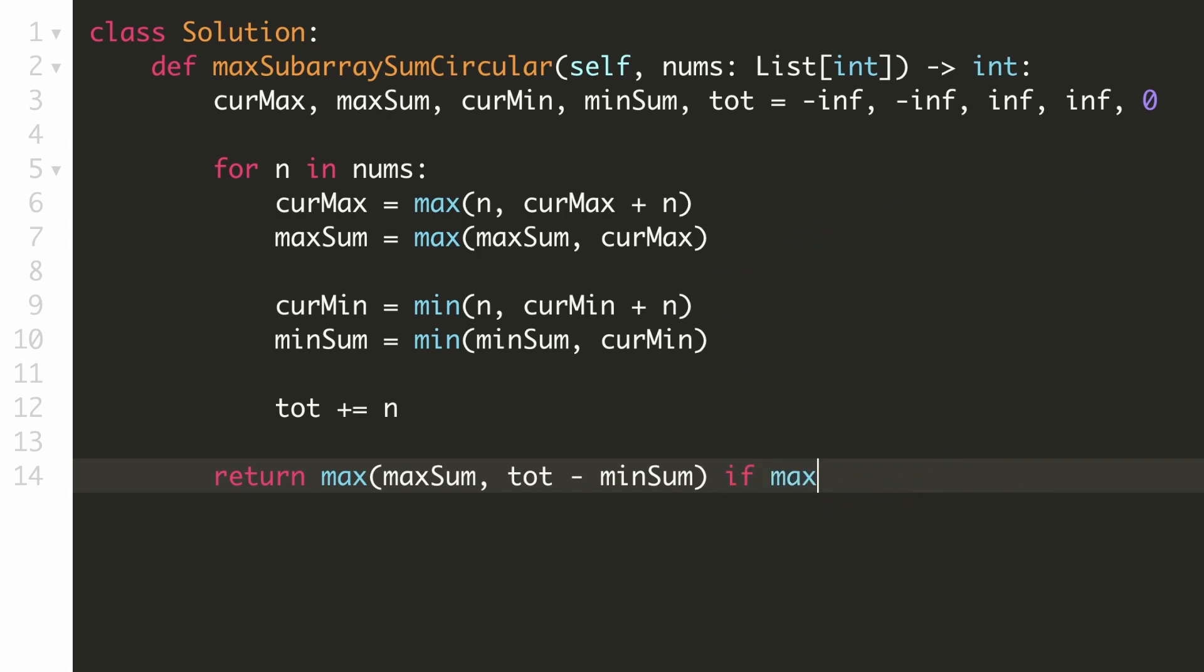So we'll only return this as the answer when the maximum subarray sum is greater than zero. And in the case of just negative numbers, we'll return the maximum of this array, which would be stored in the maximum subarray sum. We are now done with our solution.